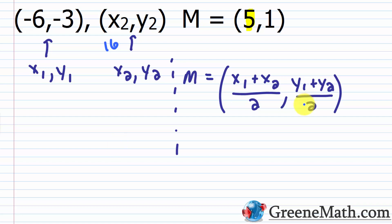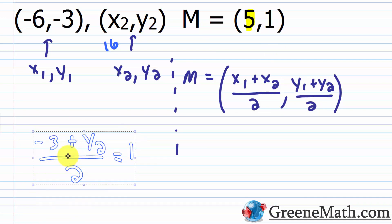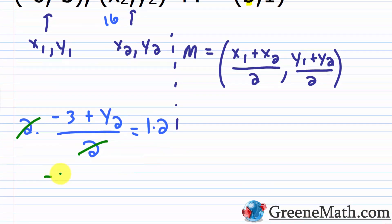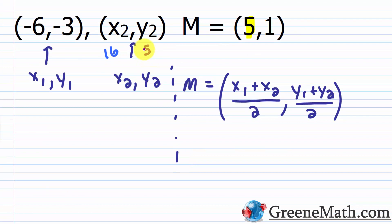For Y sub two, we set negative three plus Y sub two over two equal to one. Multiplying both sides by two: negative three plus Y sub two equals two. Adding three to both sides: Y sub two equals five. We can verify: negative three plus five is two, two divided by two is one. So the unknown endpoint X sub two, Y sub two is 16 comma five.